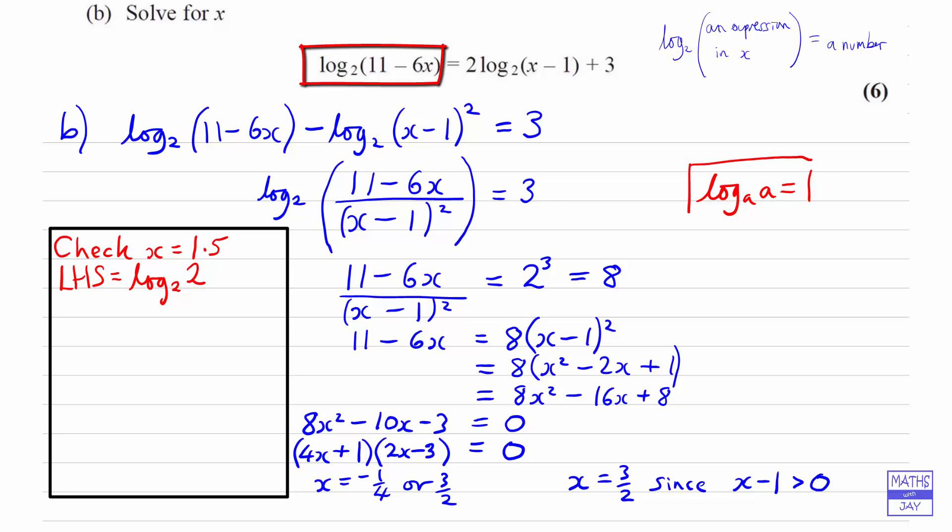And you know that there's a general rule that tells us log to base a of a is equal to 1, because a to the power of 1 is equal to a. So that applies in this case as well. Because 2 to the power of 1 is 2, we've got that log to base 2 of 2 is 1. So the left hand side of our equation is 1.